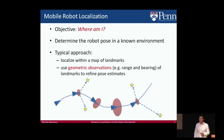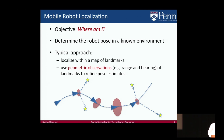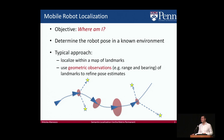The traditional way to do this is to have a prior map of geometric features such as points, planes, and lines. Online, you observe landmarks in the environment using range and bearing measurements to improve estimates of your pose. In this cartoon, the yellow stars are the landmarks and the robot uses range and bearing to improve its estimate, represented by these ellipses.